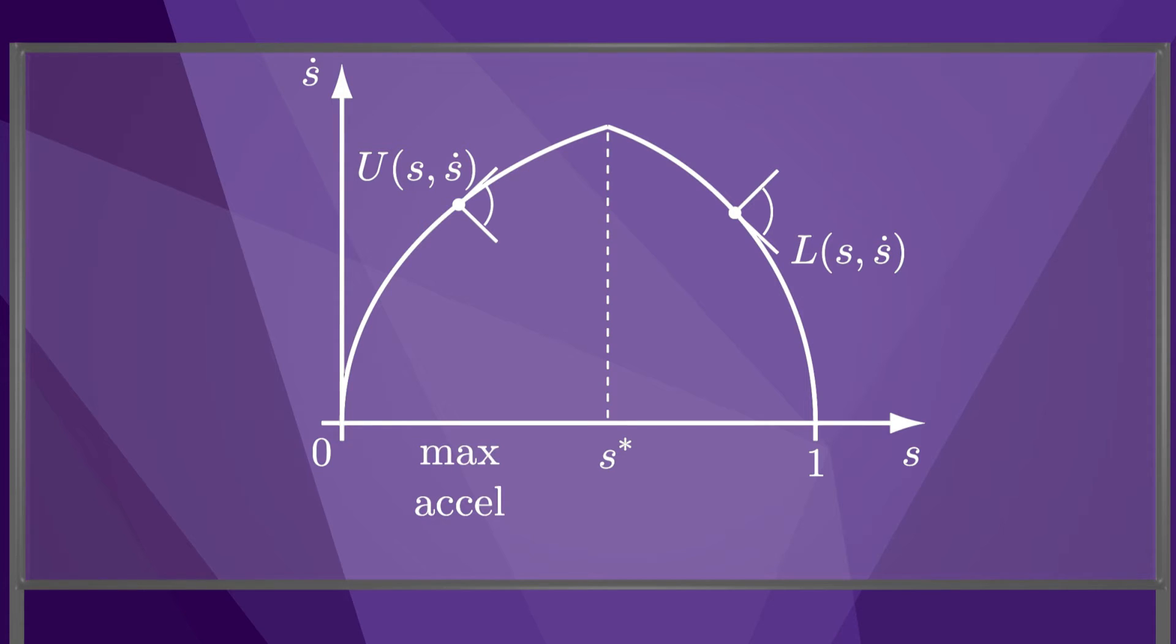During the first segment, the robot maximally accelerates along the path, and during the second segment, the robot maximally decelerates along the path. It is clear why this is time-optimal. In the first segment, the robot cannot go any faster, and in the second segment, if the speed s dot were any higher at any given s, the robot would not be able to come to a stop.